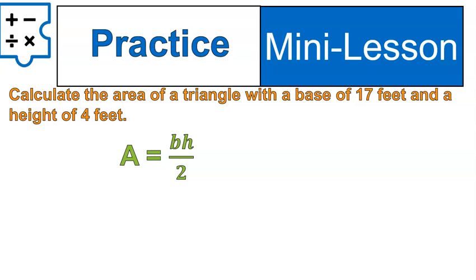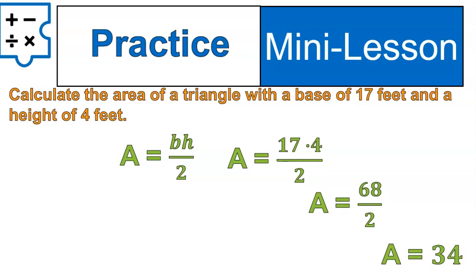Sometimes we're not given a picture, but instead we're given information in a sentence like this. Calculate the area of a triangle with a base of seventeen feet and a height of four feet. When you're given that information, you do the same thing. You substitute the information into the formula. So the base will be seventeen and the height will be four. And then we just solve like normal. Seventeen times four is sixty-eight. Sixty-eight divided by two is thirty-four. And so we can say the area is thirty-four square feet.